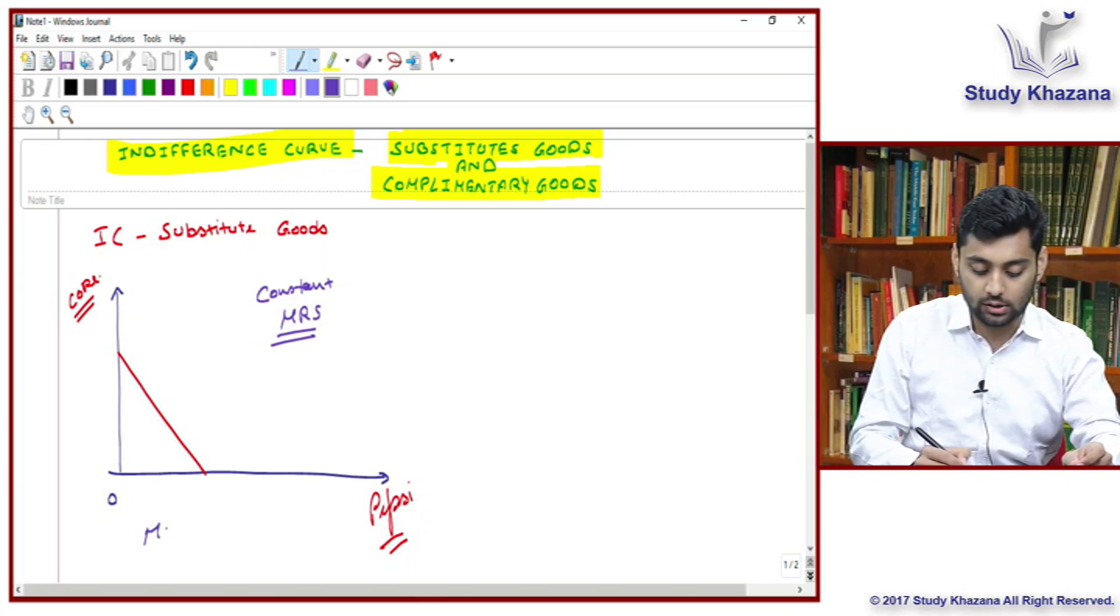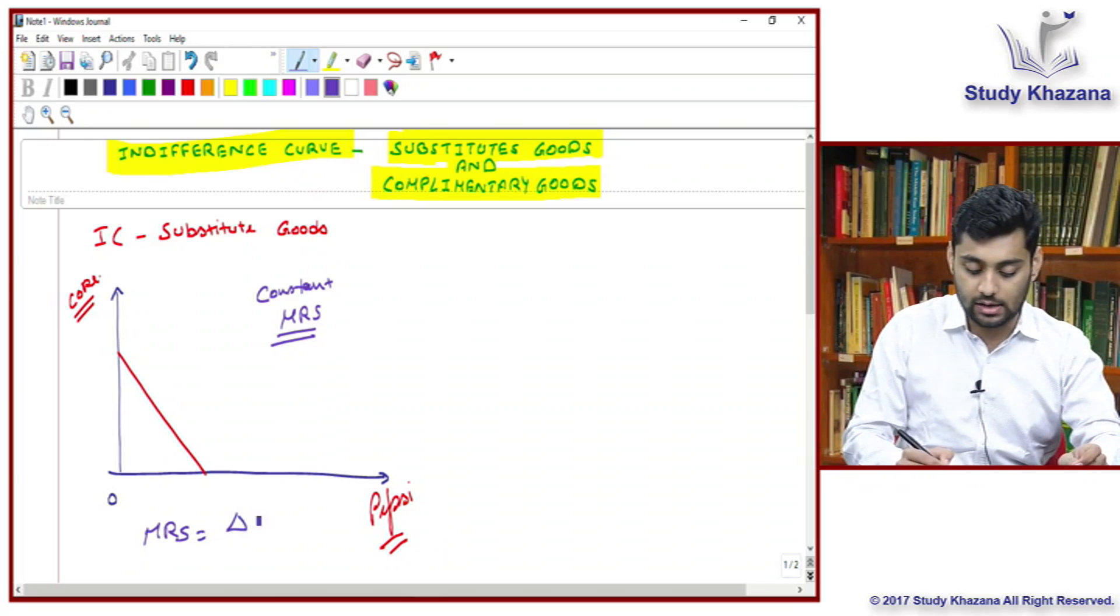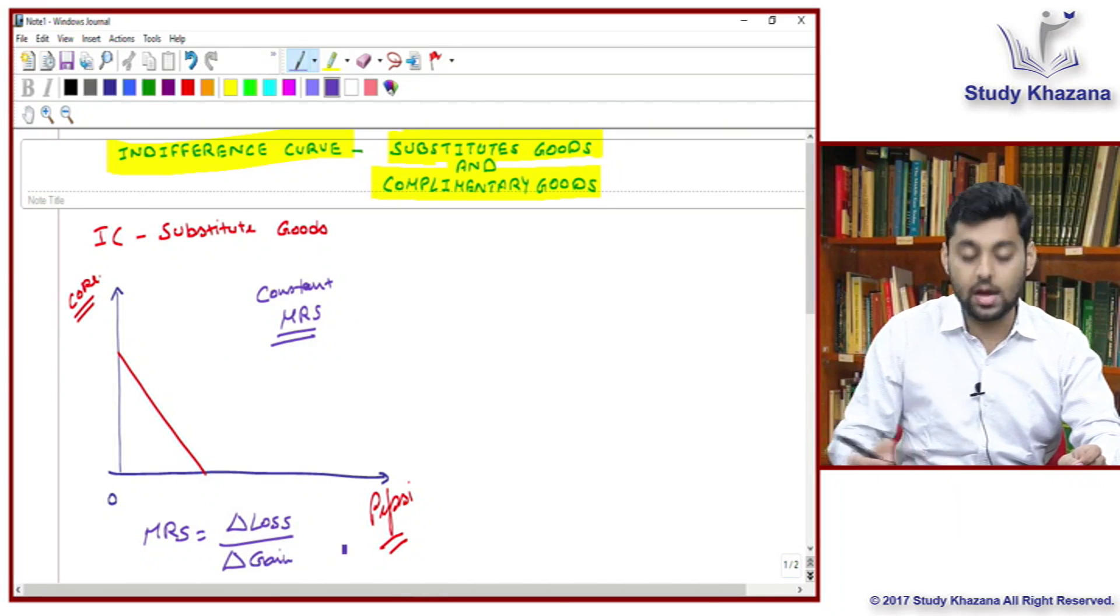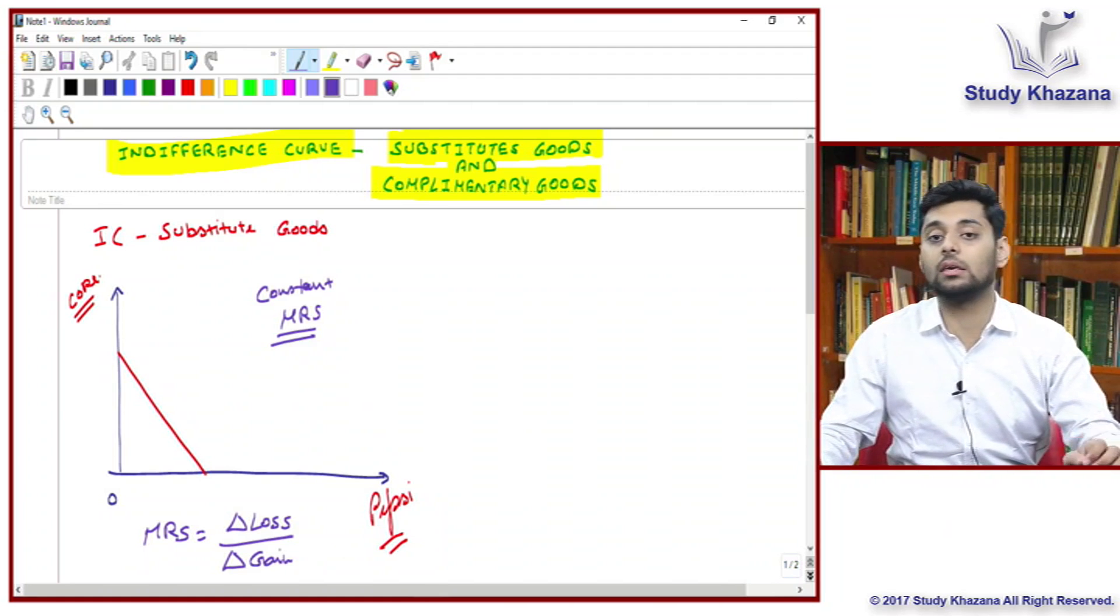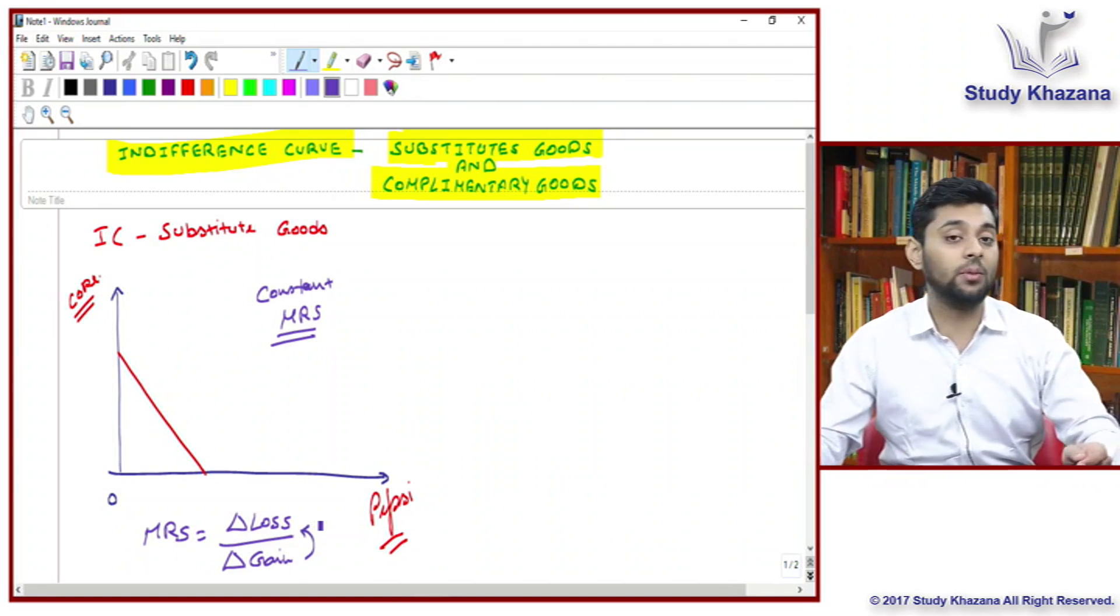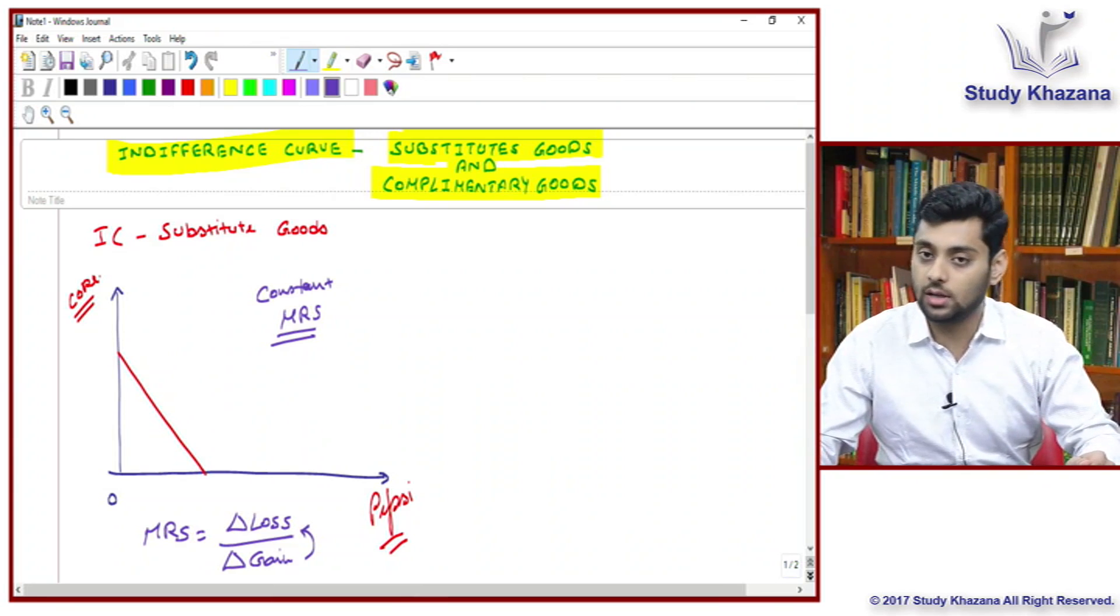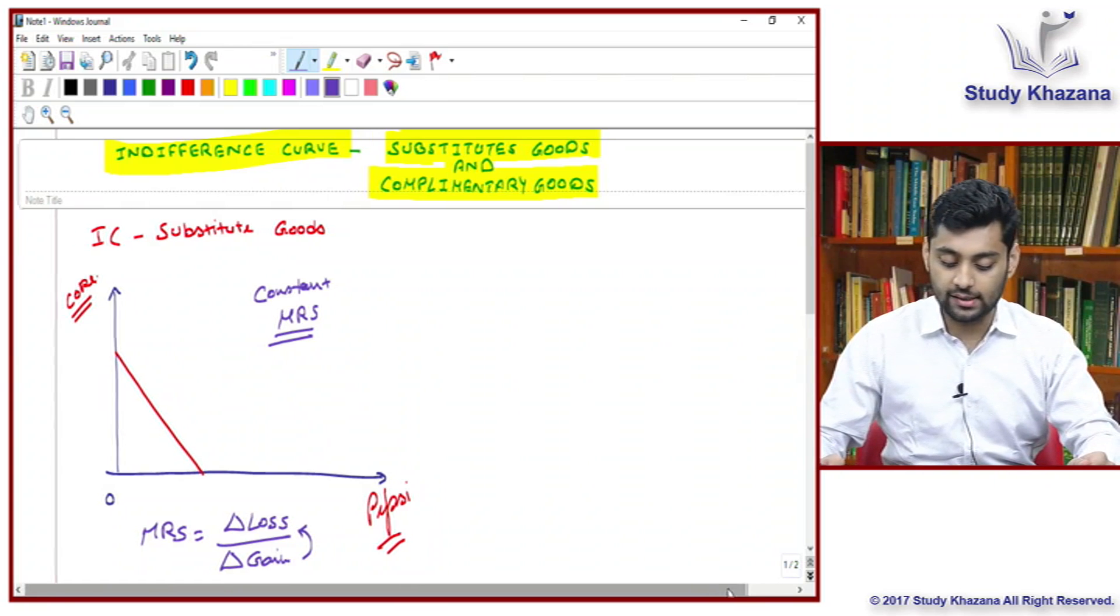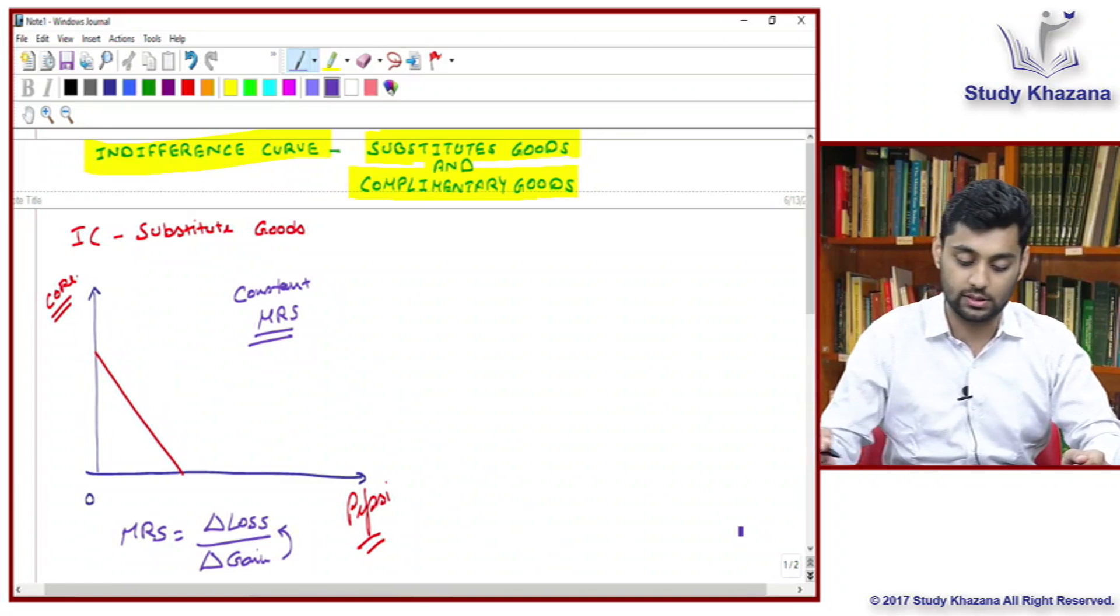The formula for the MRS is delta loss by delta gain. What you additionally lose divided by what you additionally gain. To gain something, you have to lose something. Now, constant MRS gives you this shape. Focus carefully on this schedule.